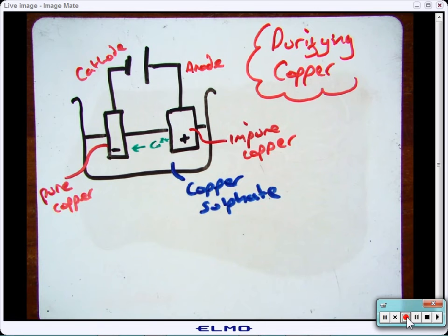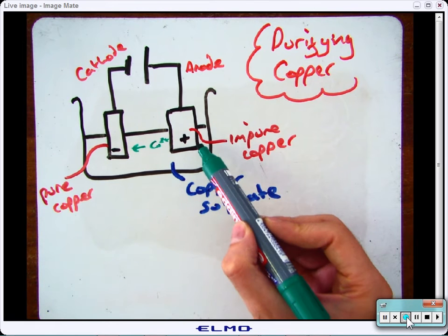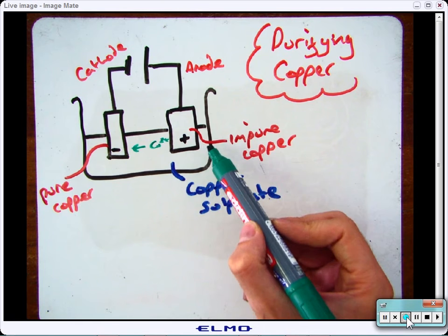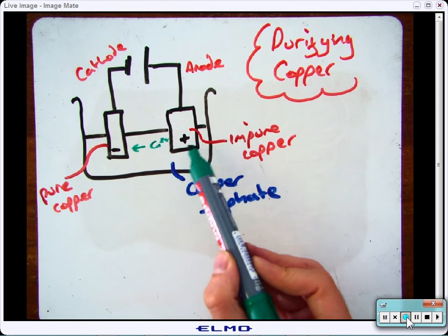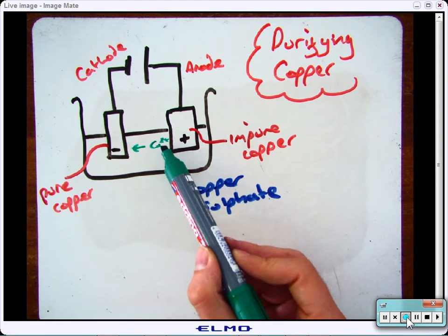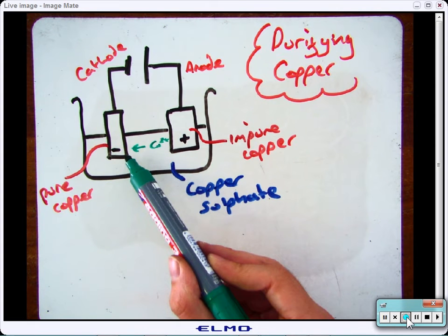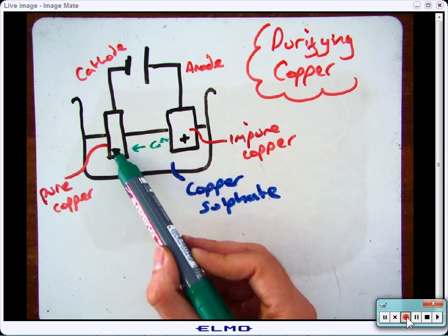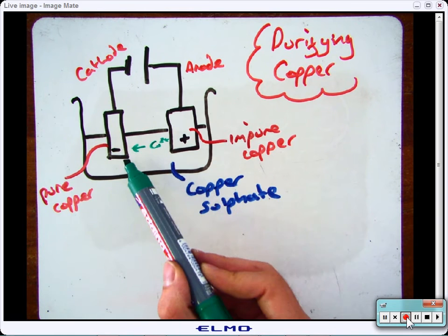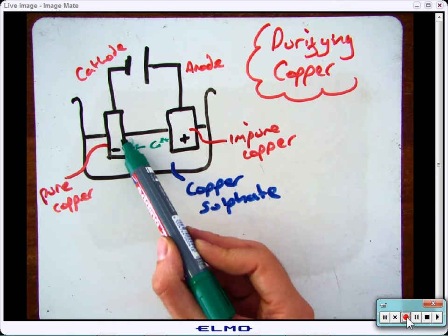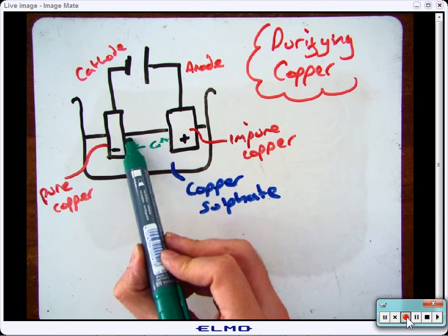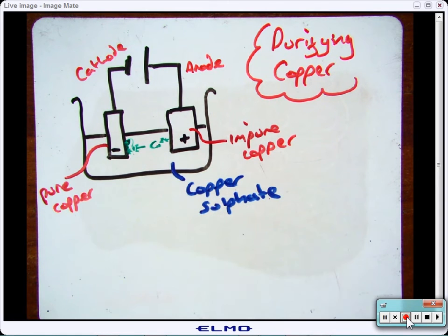Now during electrolysis, the copper atoms in the anode will start to lose electrons and they'll turn back into copper ions. So they'll turn into Cu2+. And then because opposites attract, they will naturally move towards the cathode. Once they get to the cathode, they will gain those electrons again and start to be deposited on the electrode.